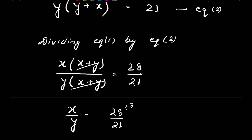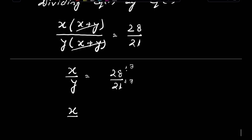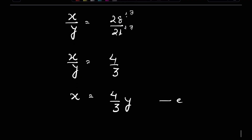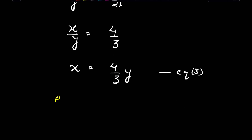We divide both numerator and denominator by 7, so x upon y is equal to 4 upon 3, or x is equal to (4/3)y. Let this be equation 3. Now put equation 3 in equation 2.